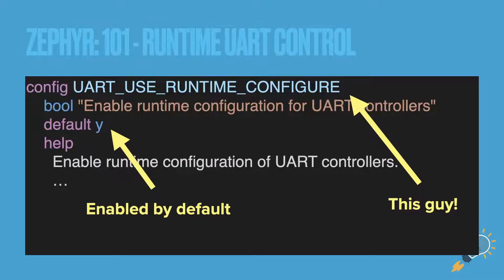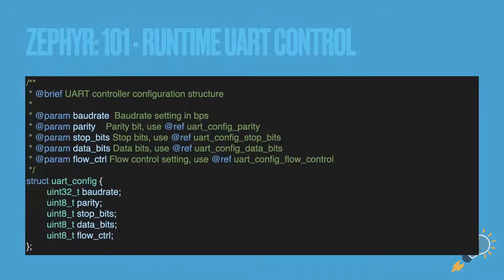So let's run through that. Everything is configured at boot, and if you care about what's already set in the configuration, you can use uart_config_get — this will get the configuration from what's already set for the device. Then you can change it and reset it using uart_configure. The API can be disabled to save space. Here's what the struct looks like for the UART configuration: you can see baud rate, parity, stop bits, data bits, and flow control.